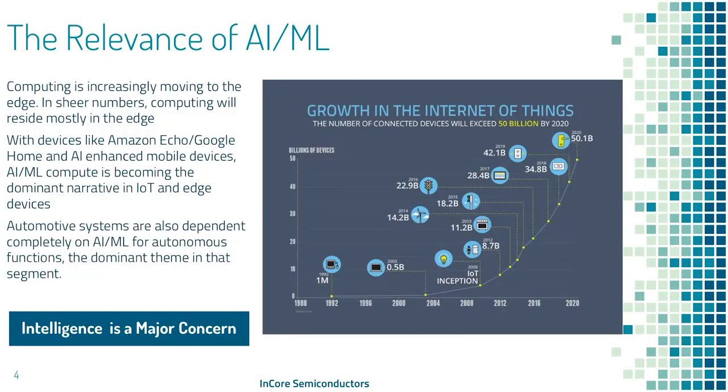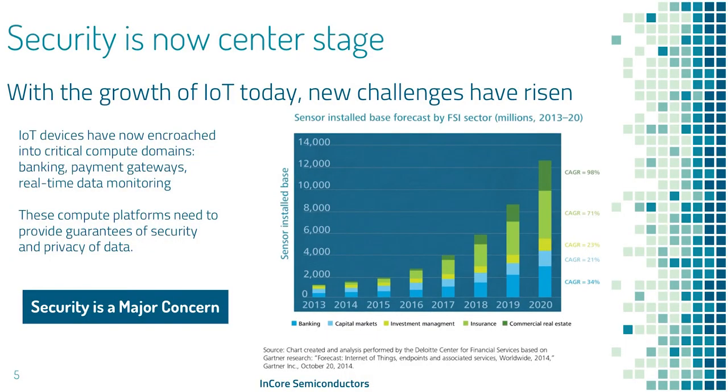Computing is increasingly moving to the edge. You're going to have a lot of edge devices — smart cities, AI cities coming up all over the planet. Each of these will have small sensors, small cameras, speaking devices — all of them running neural networks. To support those, you need something capable of accelerating without a huge overhead; you can't put a GPU with a small sensor to do facial recognition. Security is also a major concern: you're going to put chips in payment gateways, real-time monitoring, health monitoring, and you need to ensure private data remains with you, minimizing communication back to the server to reduce points of leakage.